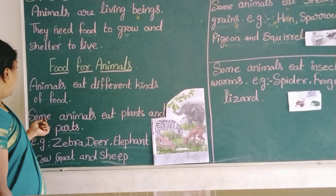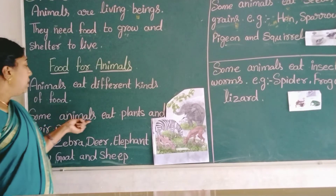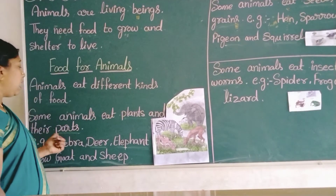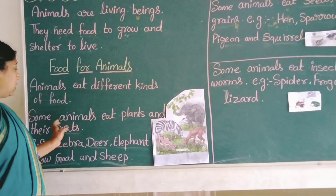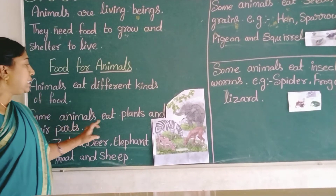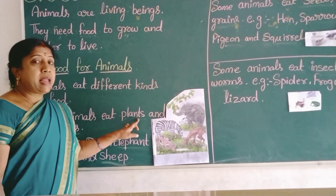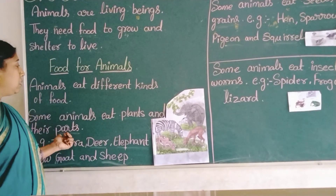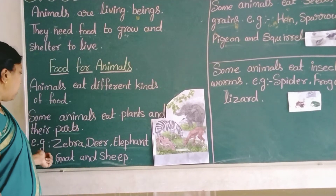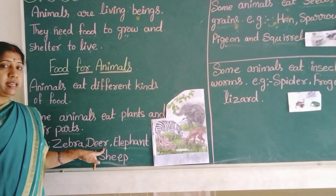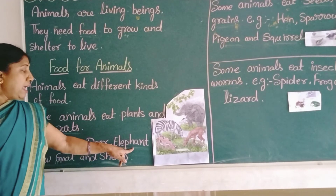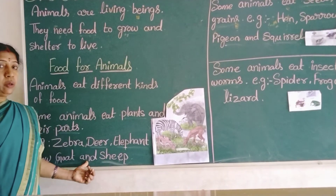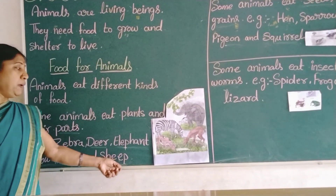Some animals eat plants and their parts. Example: zebra, bee, elephant, cow, goat and sheep.